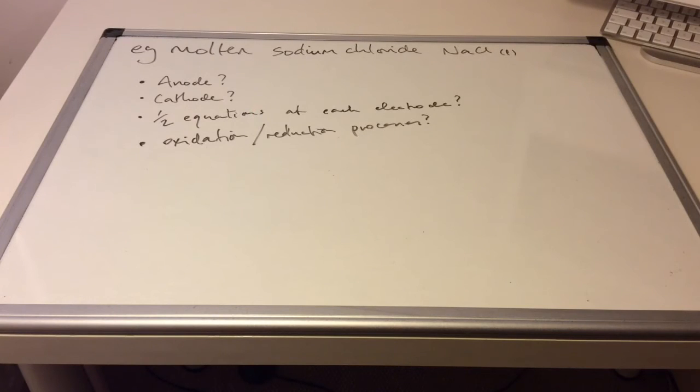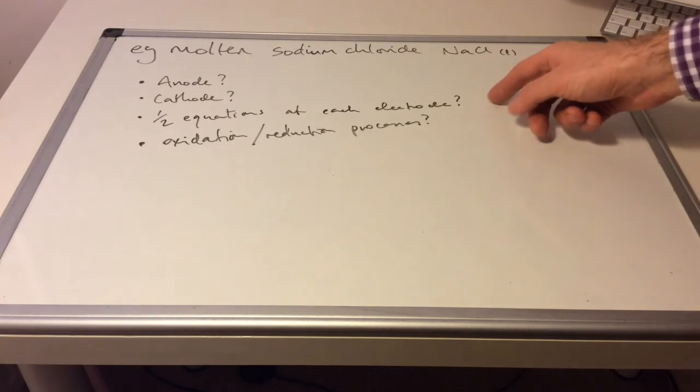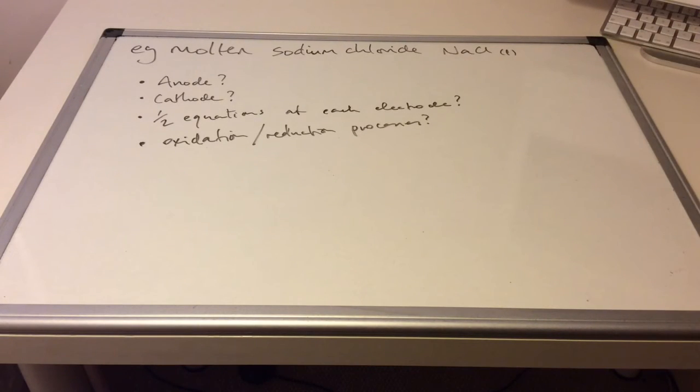So one for you to try now. If you have a go at working out what would happen if you electrolyzed molten sodium chloride. That's NaCl liquid. Think about what's going to go to the anode. What's going to go to the cathode. What are the half equations that take place at each electrode.